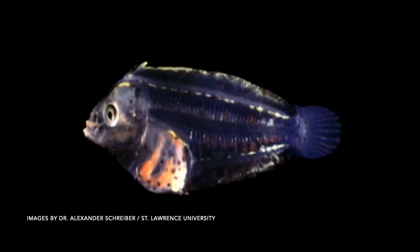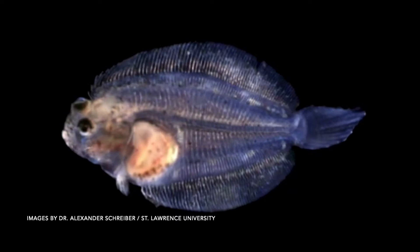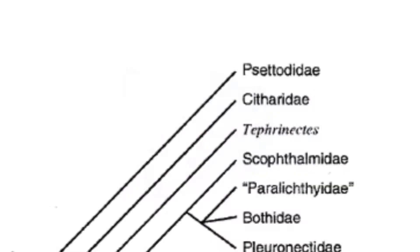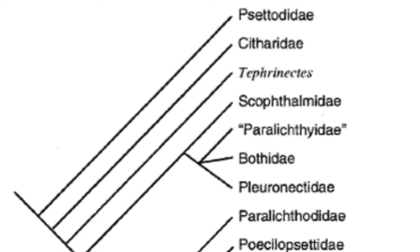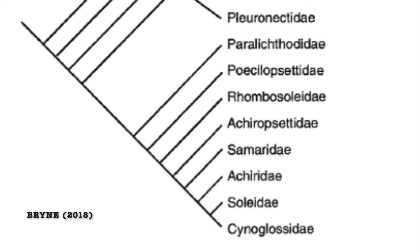And they don't start out that way. As they grow from a tiny larval fish floating in the ocean, an eye on one side of the body slowly begins to migrate over to the other side, turning the fish over. With such an obviously unique body plan, you might also assume that all flatfish are related to each other in one big happy family.